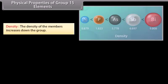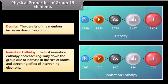Density increases down the group. The first ionization enthalpy decreases regularly down the group due to the increase in the size of atoms and the screening effect of intervening electrons.